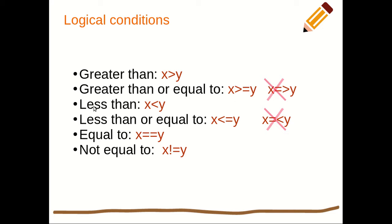Then we have less than — x less than y — using the less-than symbol. We also have less than or equal to, written as x <= y. You can never write it the other way or you'll get an error. Next we have equal to, written as x == y — that's two equals signs. And lastly we have not equal to, written as x != y.